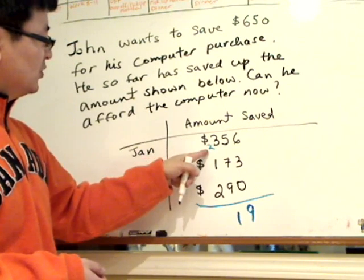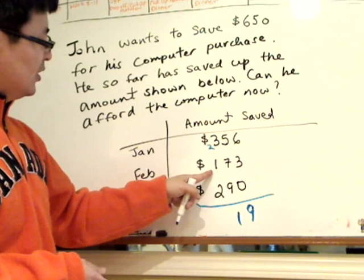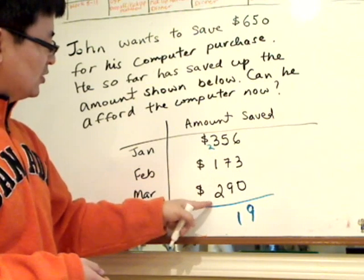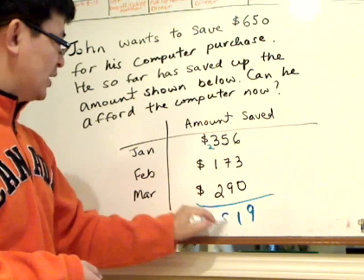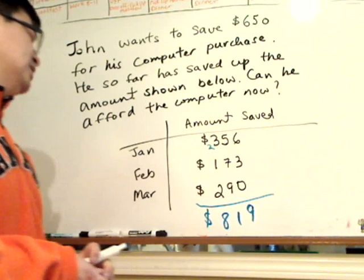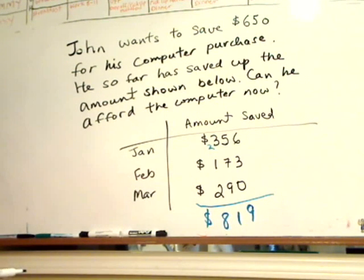3 plus 2 is 5, plus 1 is 6, plus 2 is 8. He has $819 — more than enough to purchase his computer.